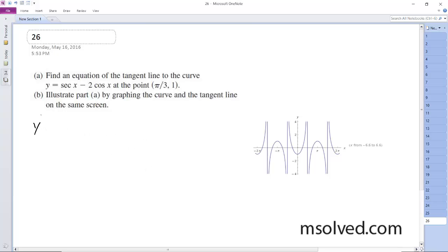So starting off here, y prime is going to be equal to the secant of x prime minus 2 cosine x prime. So what we get, the tangent is equal to, or the derivative is equal to secant x tangent x plus 2 sine of x.